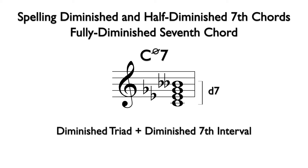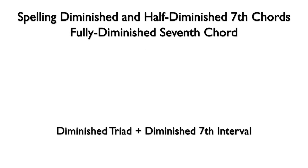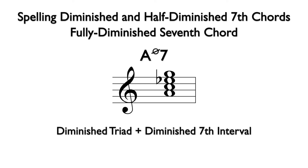So the notes of the fully diminished 7th chord are C, E flat, G flat, and B double flat. The chord symbol is the same as the half-diminished 7th chord with no slash through the circle. Here is the A half-diminished 7th chord that we previously notated. If we lower the 7th by one half-step, we now have a diminished triad with the diminished 7th, making this an A fully diminished 7th chord.